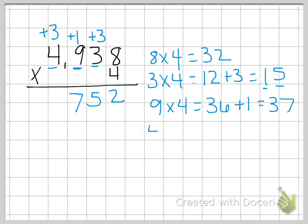So now we have 4 times 4, which is 16, plus the 3 that we carried, which makes 19. And put our 3 times our comma. So 19,752.